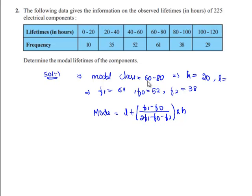Substituting all these values into the formula we get 60 plus 61 minus 52 by 2 into 61 minus F0 that is 52 minus F2 that is 38 whole bracket into H which is 20.